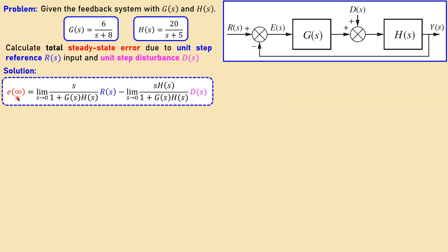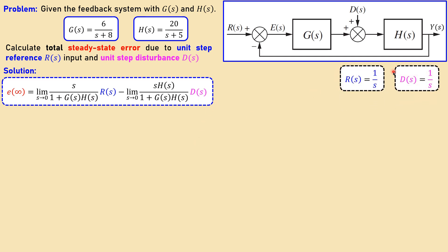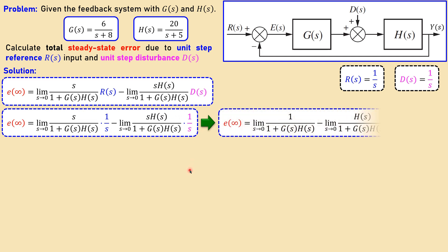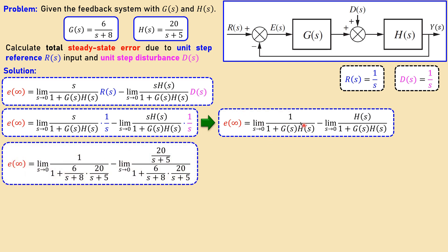For our case, the only expression we will use is this one. We know the reference is a unit step input and the disturbance is also a step input — which is of course an unwanted signal. If I now substitute one over S for R and one over S for D in here, you can see that in blue and pink. I will then lose the S in the denominator and numerator. Once we substitute G and H, we can simplify by multiplying the numerator and denominator by (S+8)(S+5).